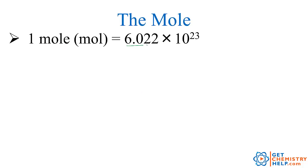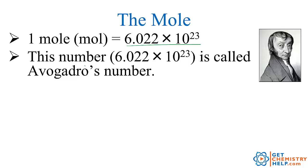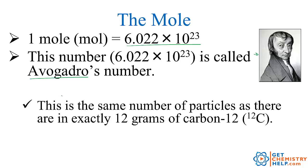So one mole is 6.022 times 10 to the 23rd. Now this sort of odd looking number is called Avogadro's number. And it's named for this sexy Italian gentleman over here. So Avogadro's number is 6.022 times 10 to the 23rd. And that's the number of particles as there are in one mole of anything. Now 6.022 times 10 to the 23rd, I think you'll agree, is kind of an odd number. So where does that come from?